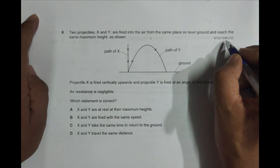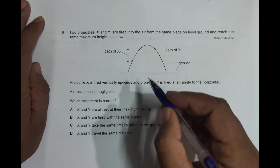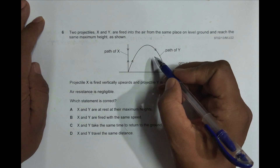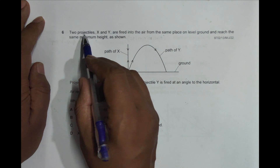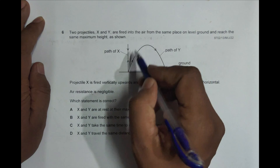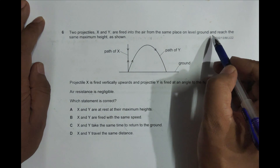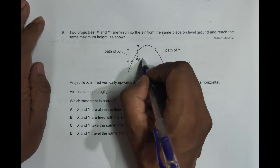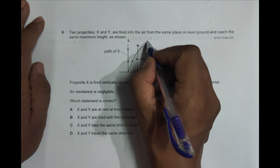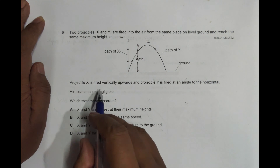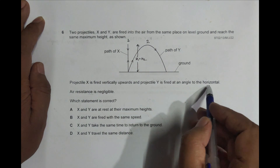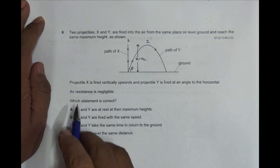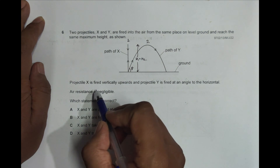Hello folks. This is a 2022 May-June paper 1, question number 6. As you can see from the diagram, this question is from the chapter kinematics and is concerned with projectiles. Two projectiles X and Y are fired into the air from the same place on level ground and they reach the same maximum height, so h1 equals h2. Projectile X is fired vertically upward and projectile Y is fired at an angle theta to the vertical.